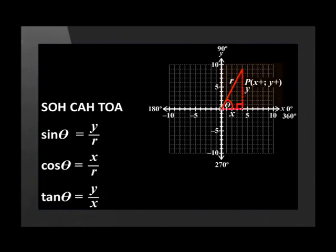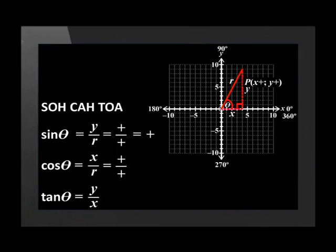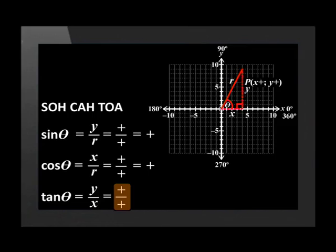If point P is in the first quadrant, x and y are both positive. Sin theta equals a positive value divided by a positive value, giving a positive answer. Cos theta is also a positive value divided by a positive value, giving a positive answer. And tan theta is also a positive value divided by a positive value, giving a positive answer. From this, we can see that all trigonometric ratios are positive in the first quadrant.